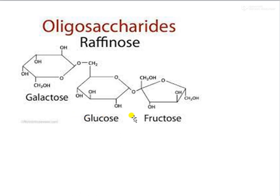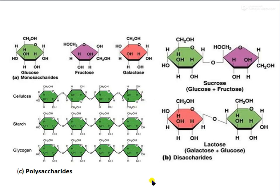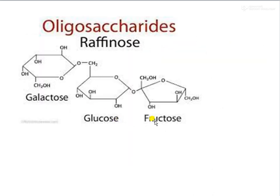To recap: glucose and fructose gave you sucrose; glucose and galactose gave you lactose. Now when you have glucose, fructose, and galactose — all three together — you get another combination called raffinose, which is an oligosaccharide.